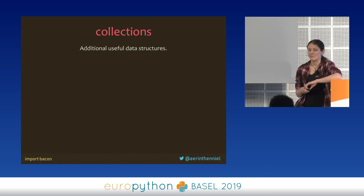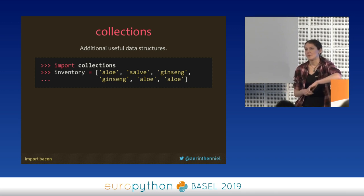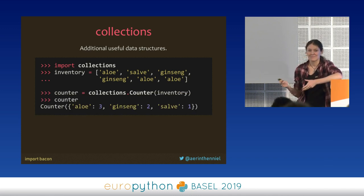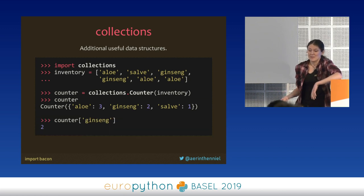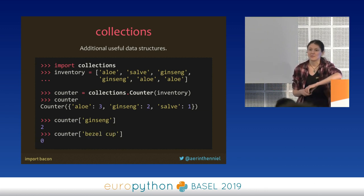There is a very nice library in the standard library that gives you additional data structures — it's called collections. Imagine you have a list with some things appearing multiple times, and you want a count of each element. You can iterate over it and make a dict, but you can also just make a Counter out of it, which does all of this for you. A Counter is basically a glorified dict — it's a dict because you can access elements with their names as keys and get the count. It's glorified because if you try to access something that isn't there, it just gives you zero. No KeyErrors for you.